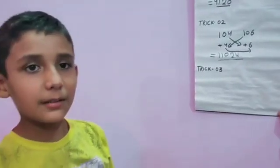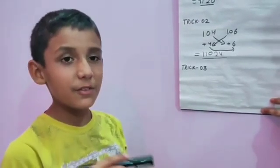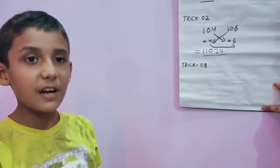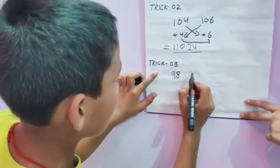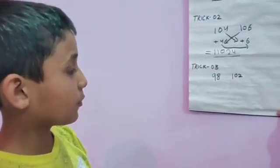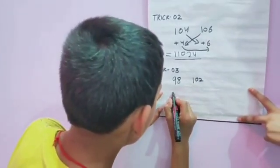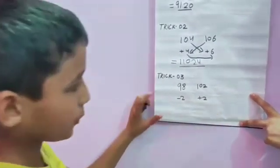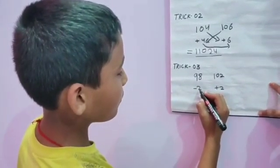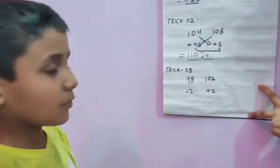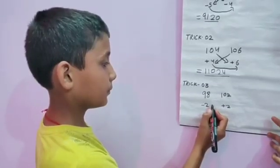Trick number 3: we take numbers near 100, but one is less than 100 and one is greater than 100. I take 98 and 102. The difference from 100 for 98 is minus 2, and for 102 it is plus 2. We subtract 2 from 102 to get 100, and add 2 to 98 to also get 100.